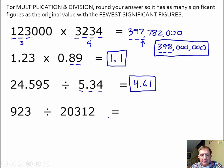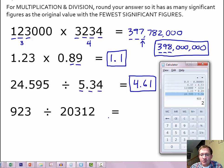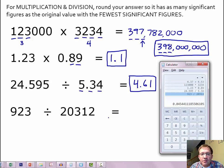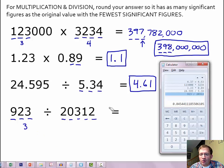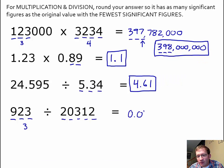Our final example: 923 divided by 20,312. Our answer comes out to be 0.0454411185 — a lot of precision. Calculators just go on forever because they don't know when to quit. Our answer needs to have three significant figures because 923 has 1, 2, 3 significant figures. The other value has 1, 2, 3, 4, 5 significant figures. But our answer should have just three. So we take 0.0454411... and round it to three significant figures: 0.0454. With the decimal point present, we count from left to right starting with the first non-zero. So the 4, 5, 4 are significant — this has three significant figures.